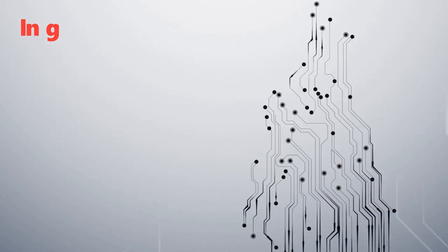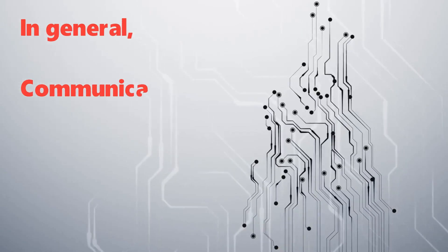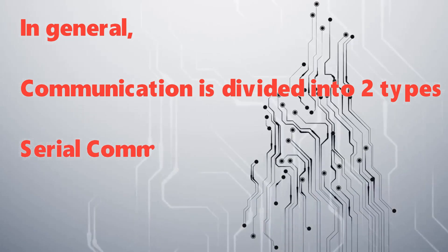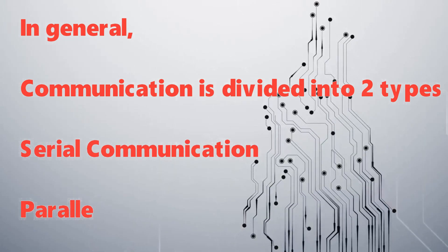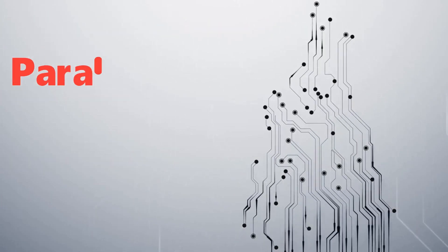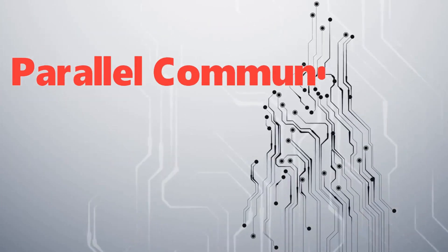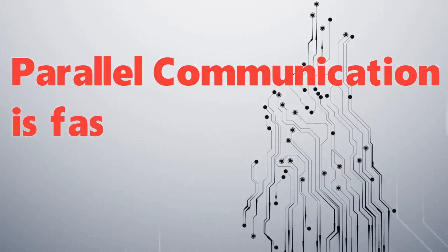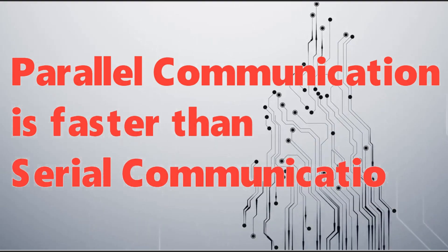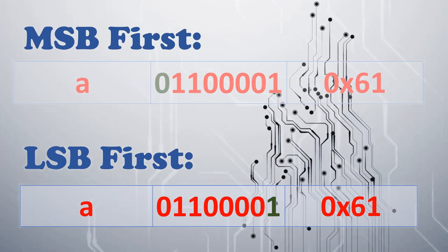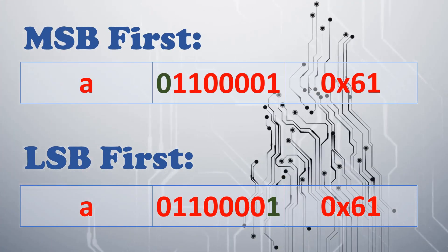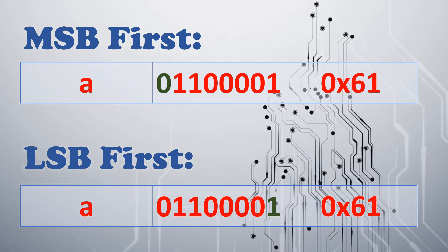In general, communication in embedded systems is divided into two types: serial communication and parallel communication. Parallel communication is faster than serial communication. Serial communication has two types of wire reference as shown here.